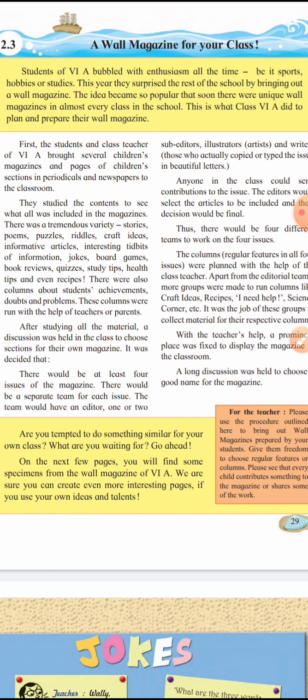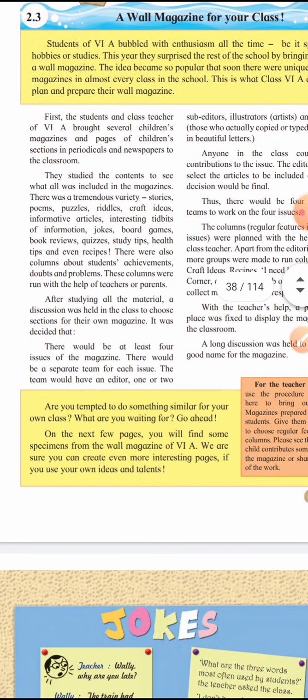This is what class 6A did to plan and prepare their wall magazine. First, the students and class teacher of 6A brought several children's magazines and pages of children's sections from periodicals and newspapers to the classroom. You have to collect magazines and important cuttings — important news, material related to studies, things about schools.